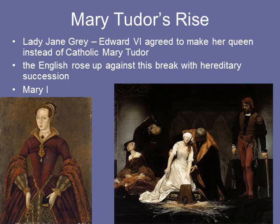Lady Jane Grey is the woman that Edward VI agreed to make queen when he passed, instead of his half-sister Mary Tudor, who is Catholic and older than him. The English were not going to accept this. They saw it as a break with hereditary succession — the way you determine who should succeed based on how closely related, their gender, their age. In this picture you see a portrait of Lady Jane Grey, and then a dramatic 19th-century painting of her execution. There was no way that Mary I was going to let her stick around and be a threat.